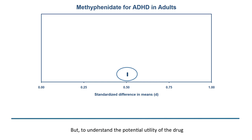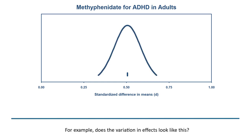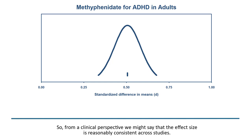But to understand the potential utility of the drug, we also need to know how much the effect size varies across populations. For example, does the variation in effect look like this, where the effect size does vary but always falls in the moderate range? From a clinical perspective, we might say that the effect size is reasonably consistent across studies.